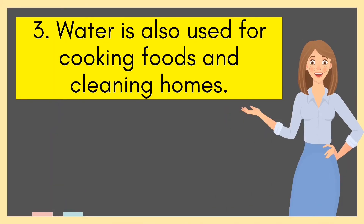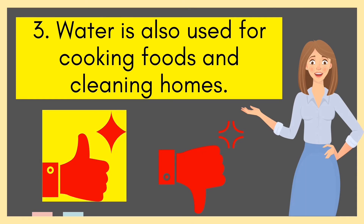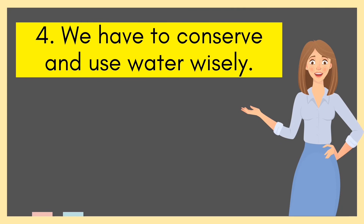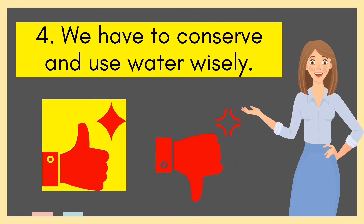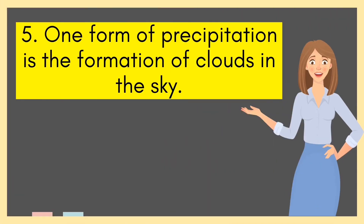Number 3: Water is also used for cooking, food, and cleaning homes — thumbs up or thumbs down? Very good! The correct answer is thumbs up. Number 4: We have to conserve and use water wisely — thumbs up or thumbs down? Good job! It is thumbs up. Number 5: One form of precipitation is the formation of clouds in the sky — thumbs up or thumbs down? Correct! The answer is thumbs down.